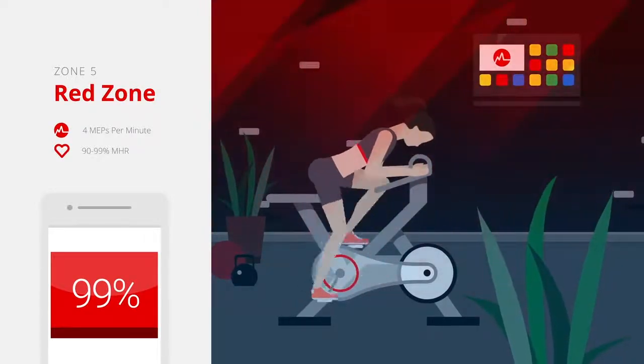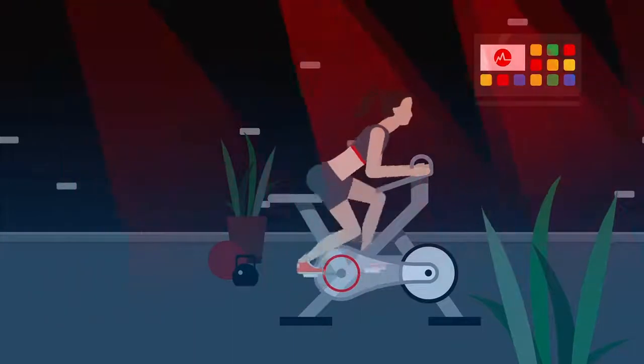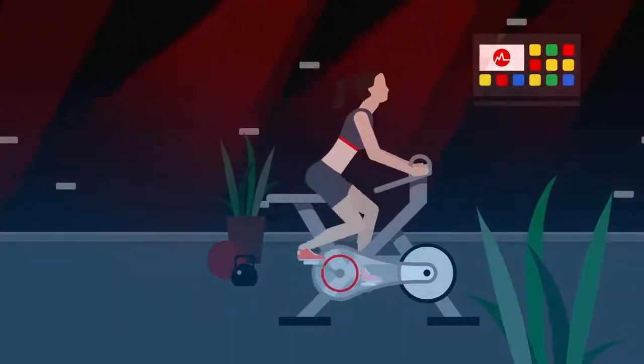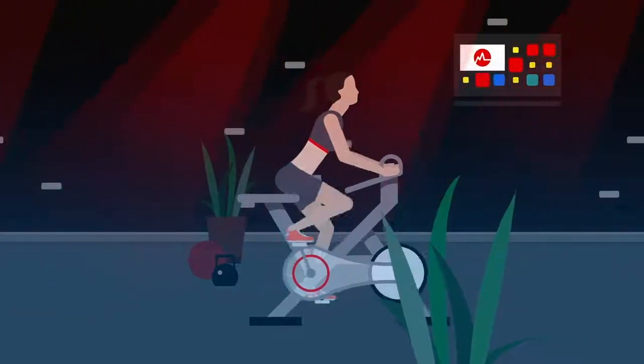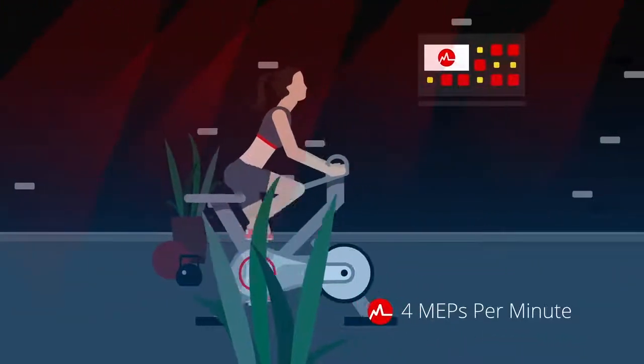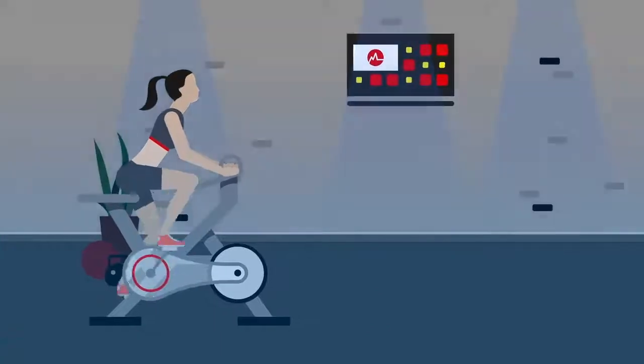Your fitness level will determine how often and how long you can exercise here. Remember, the yellow and red zones both provide MEPs. During cooldown, keep your belt on. You'll keep earning MEPs until your heart steadies below the gray zone.